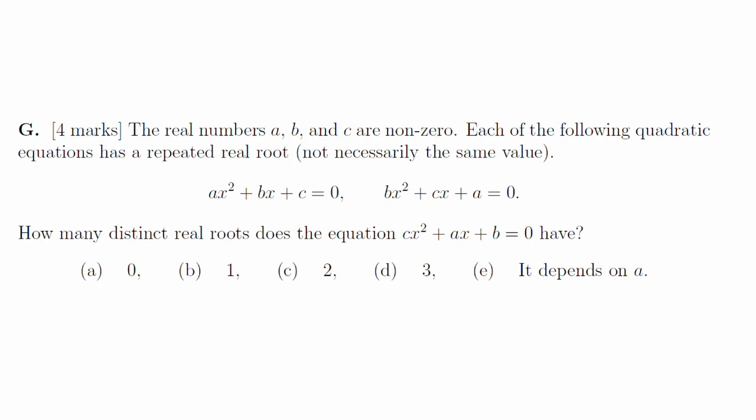1g. Write down the discriminants of these two quadratics, b squared minus 4ac is 0 and c squared minus 4ab is 0. Now multiply and divide by bc to get down to the discriminant for the new quadratic. It's negative, so there are no real roots.